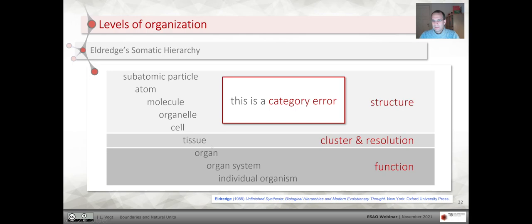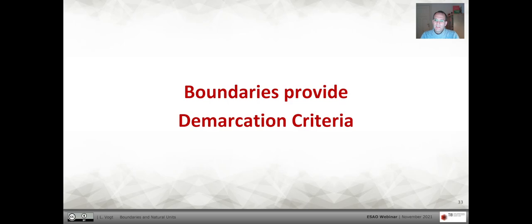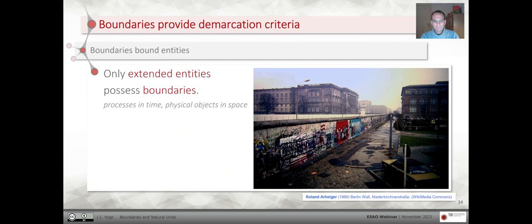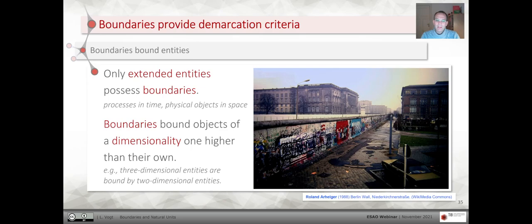An alternative is to look at boundaries and how boundaries can provide demarcation criteria. What are boundaries? Only extended entities possess boundaries — processes in time or physical objects in space. These boundaries bound objects of dimensionality one higher than their own: a three-dimensional entity is bound by a two-dimensional surface, which is then bound by a one-dimensional line, and so on. That's a mathematical notion of boundary. From here on, I will focus on physical objects and physical boundaries.